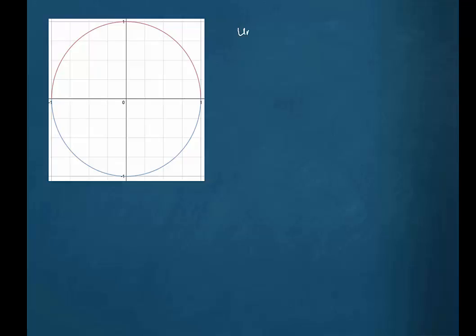This is called a unit circle. It's called a unit circle because the radius is one. We can see that the distance from the center out to the edge is one unit. And since that's the case, the circumference of this circle, which would be 2πr — the formula for circumference of a circle — would be 2π times one unit, or 2π.